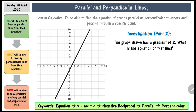The graph drawn has a gradient of 2. What is the equation of that line? In order for you to answer this question, you need to consider the formula of a straight line, which is y equals mx plus c. m stands for the gradient and c stands for the y-intercept. If you know where the y-intercept is, it shouldn't be so difficult to answer this question.